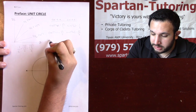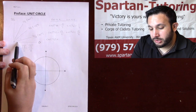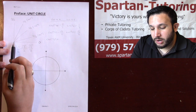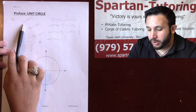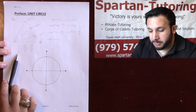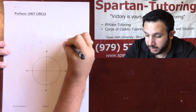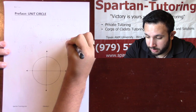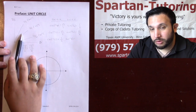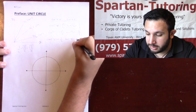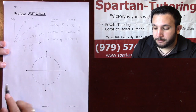For cosine of pi over 3, notice how little you travel in the x direction relative to y, so you pick the smallest number: 1/2. And for sine of pi over 3, since sine goes in the y direction and you travel really far in the y direction, that's square root of 3 over 2. That's how you handle the first quadrant.